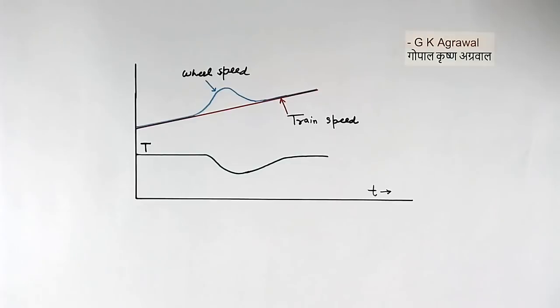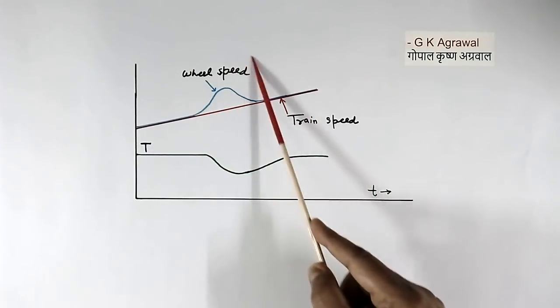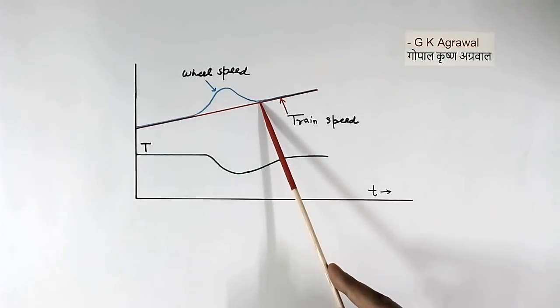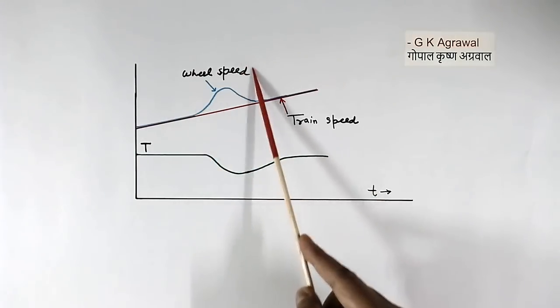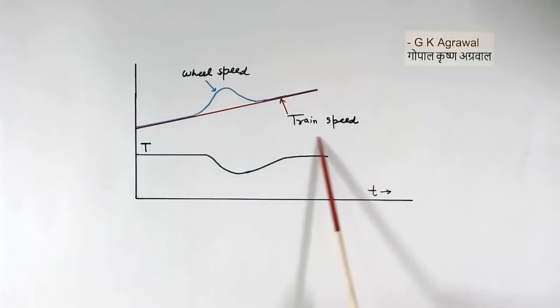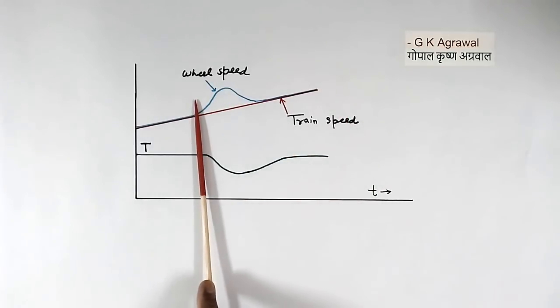This is slip control considered between rail and wheel. This is time. This is torque. Train speed is shown using red color, and this speed is increasing with time. Similarly, wheel speed is shown using blue color. That also is increasing with time. Wheel speed and train speed should be equal, which is shown up to here.